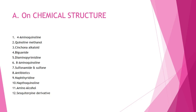The 12 classes are: first, four-aminoquinoline; second, quinoline methanol; third, cinchona alkaloid; fourth, biguanide; fifth, diaminopyrimidine; sixth, eight-aminoquinoline; seventh, sulfonamide and sulfone; eighth, antibiotics; ninth, naphthyridine; tenth, naphthoridine; eleventh, amino alcohol; and twelfth, sesquiterpene derivatives.